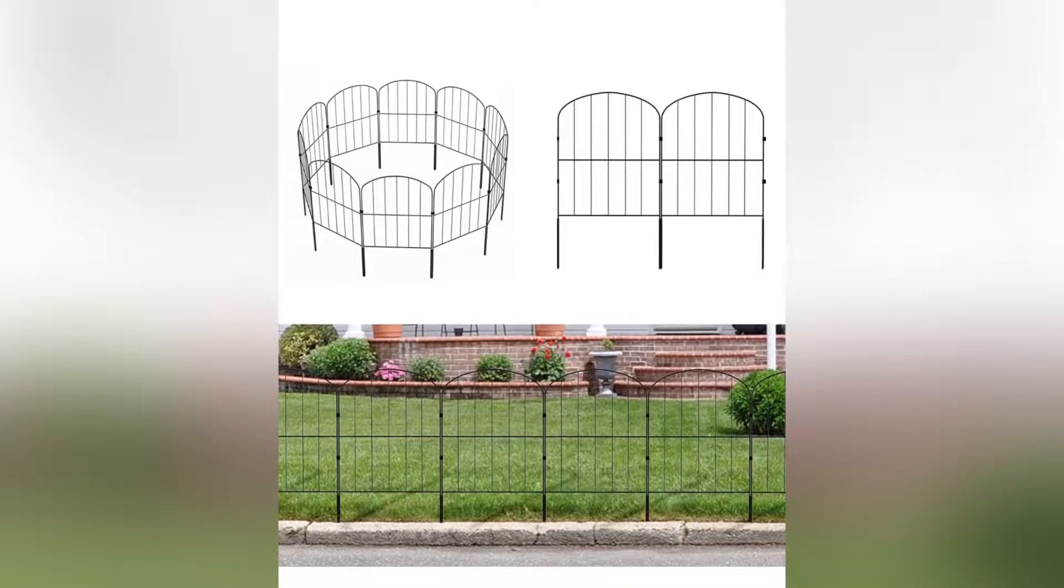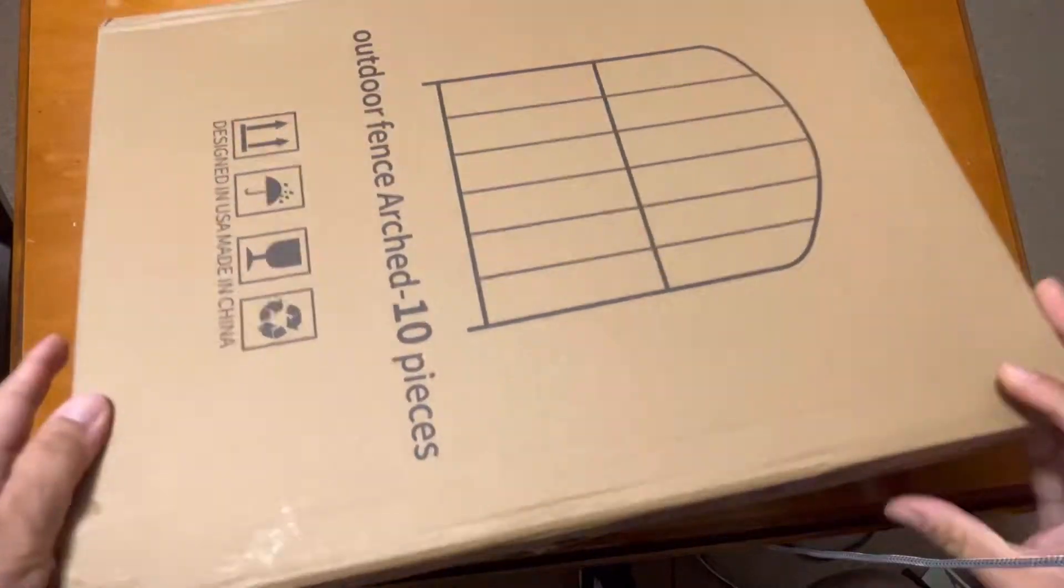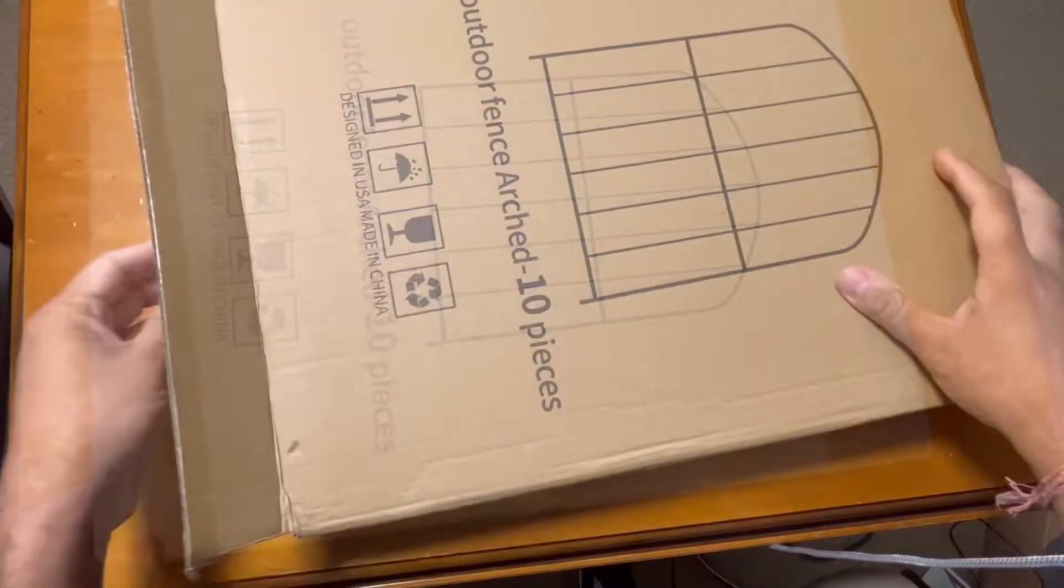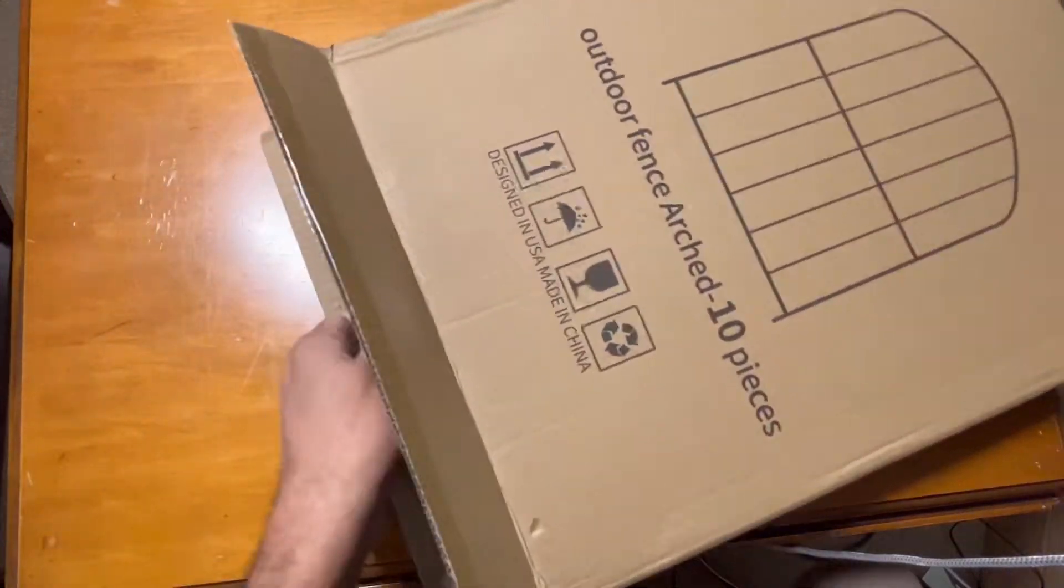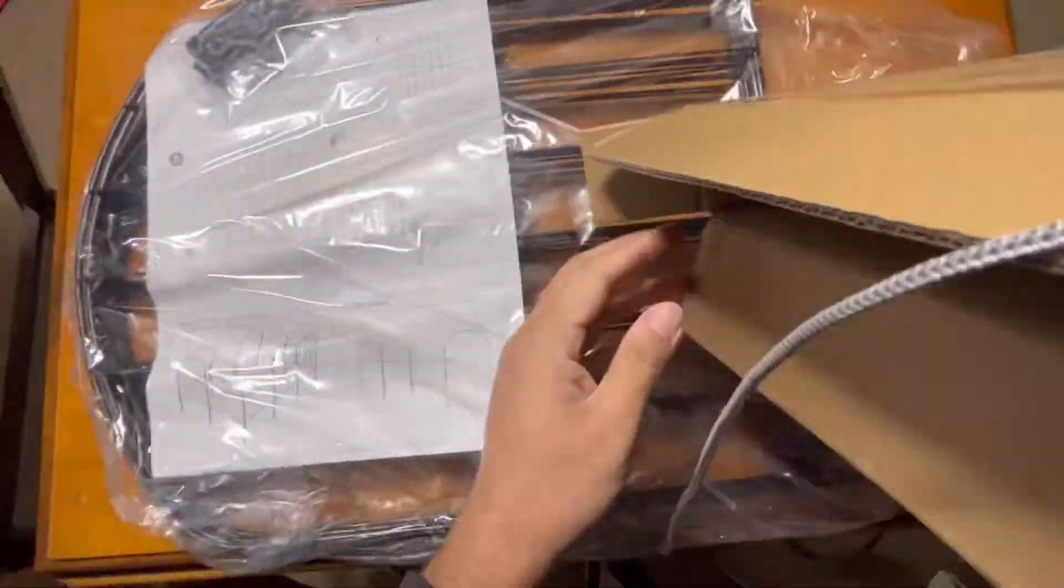Hi guys, I'm showing you this metal fencing. This is a decorative metal fencing, 10 pieces used for outdoor garden. You can see this is the arced one, so it has a nice design and you can use it anywhere you want in your yard.